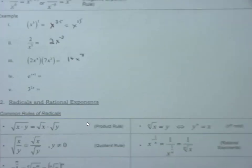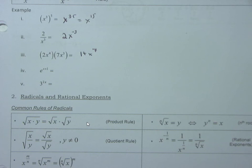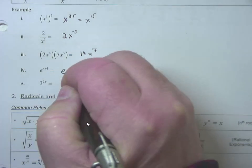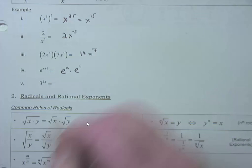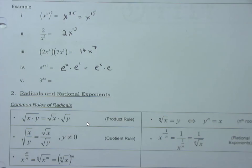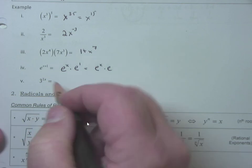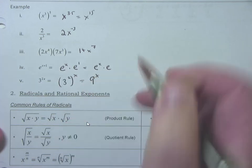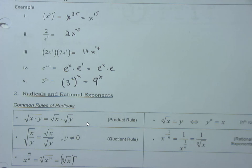Another thing to know is splitting exponentials, like e to the x plus 1. If you can add exponents going forward, you can go in reverse: e to the x plus 1 is the same as e to the x times e to the 1st, which is e to the x times e. Also, e³ to the 2x — power to a power, you multiply — that's 3 squared to the x, and 3 squared is 9, so that's 9 to the x power.